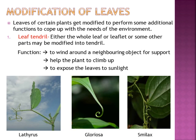In your book, examples of leaf tendrils are given. In Lathyrus, the whole leaf forms a tendril. In Gloriosa, the leaf tip forms a coiled structure — so the modified leaf tip forms the tendril. In Smilax, the stipular tendrils are formed — stipules are present near the nodes, they are protective in function, and sometimes these stipules form tendrils also.